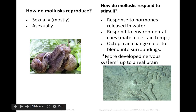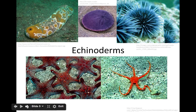Octopi changing color is very convenient when you're down on the sand trying not to be seen so you can attack unsuspecting crabs. They also have a much more developed nervous system. Even snails have a more developed nervous system, and octopi even have a real brain — though I don't think they do calculus, but maybe someday, especially now that they're walking on land.